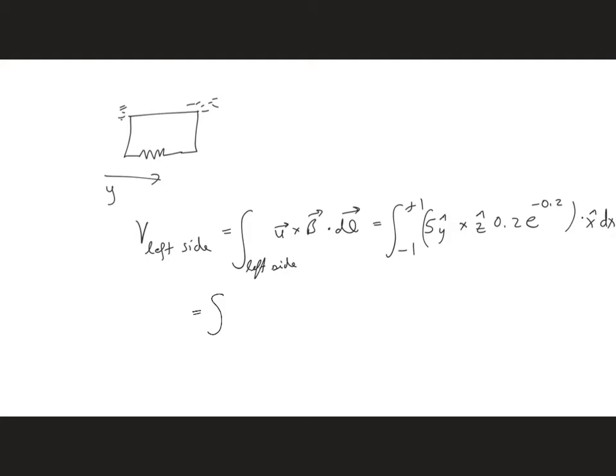Simplifying, from minus 1 to positive 1 we get 1X hat e^(-0.2) dotted with X hat dX, which gives us Xe^(-0.2) evaluated from minus 1 to positive 1. We end up with 1.637 volts.